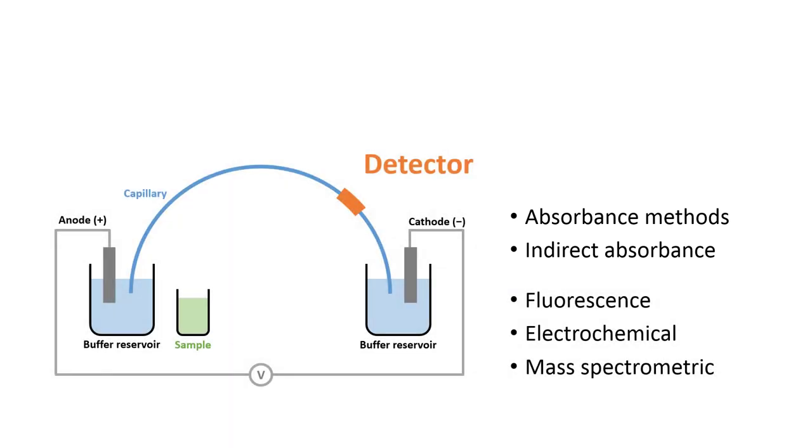In CE, the detector is usually placed near the end of the capillary, but not at the end of the capillary. This type of detection methods are called the on-column detection.